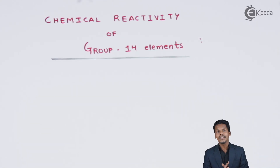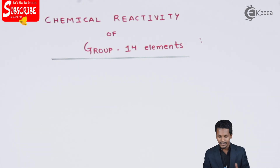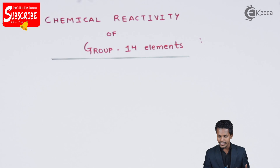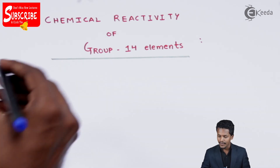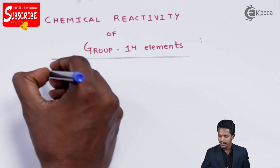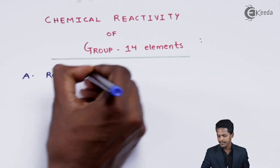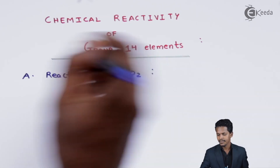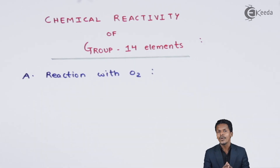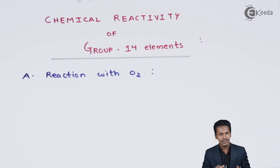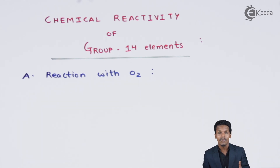The first thing we are going to talk about is what happens when the Group 14 elements react with oxygen. Whenever Group 14 elements react with oxygen, they form their respective oxides. For example, if carbon reacts with oxygen it forms either carbon monoxide or carbon dioxide.